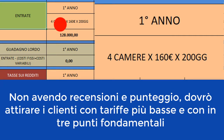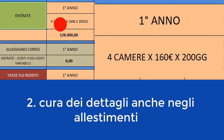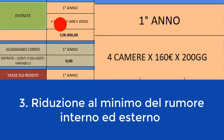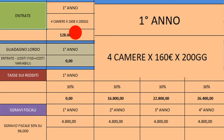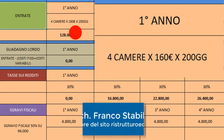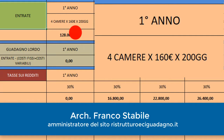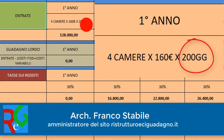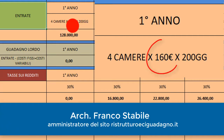I tre punti fondamentali sono l'estetica, la cura dei dettagli negli allestimenti e nell'arredo, e la riduzione al minimo del rumore interno ed esterno. Ho supposto che questa struttura, un palazzo signorile di pregio, sia ubicata in una città media con un turismo medio. Ecco perché ho previsto un'occupazione di 200 giorni l'anno, ragionando per difetto.